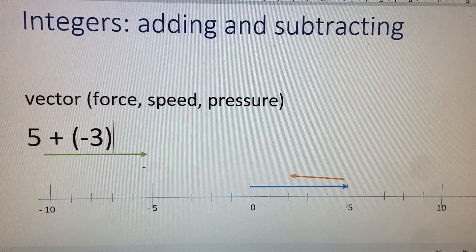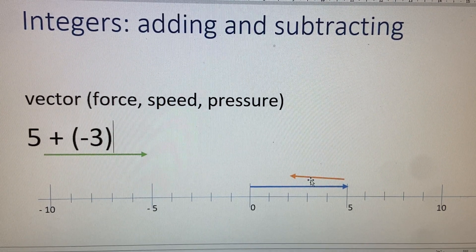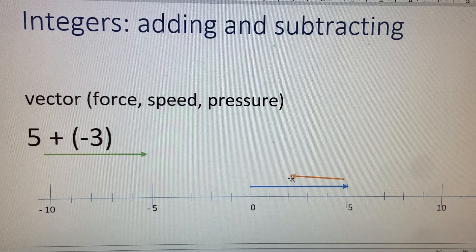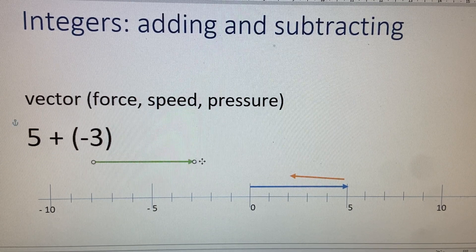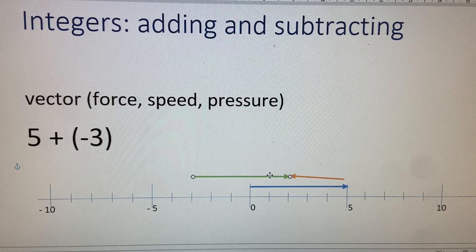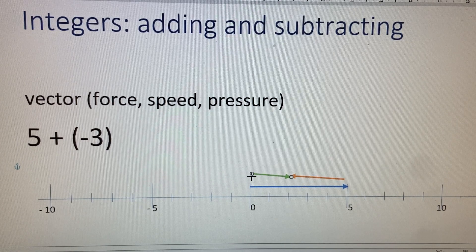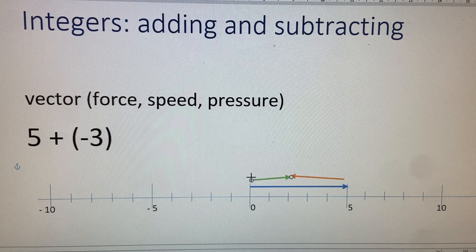So in this case this orange arrow is negative three. We have a resultant vector because we didn't end up where we started. The negative arrow, sorry, the resultant arrow is gonna be this long there.